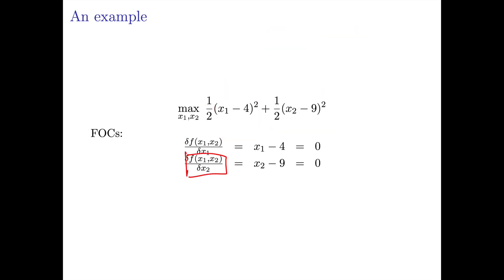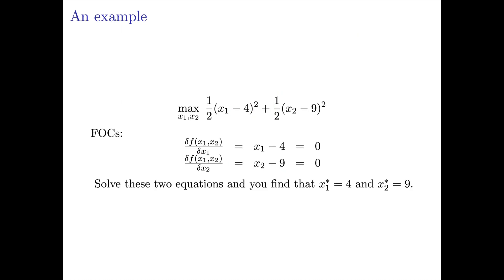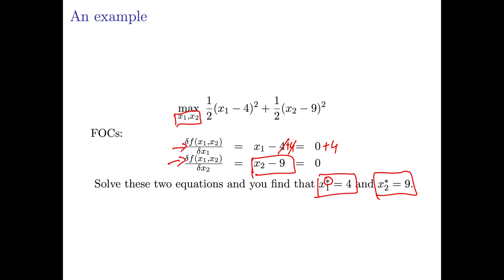We do a similar exercise to calculate the partial derivative with respect to x2. The first part is a constant because x1 is treated as a constant. When we take the derivative of this part with respect to x2, it's one-half times 2 times x2 minus 9. The 2s cancel again, and we're left with x2 minus 9. So we've got two equations and two unknowns. To solve for x1, we just add 4 to either side, so the optimal x1 is 4. Similarly, we just add 9 to either side to find that the optimal x2 is 9. We represent these optimal values using the asterisk notation.